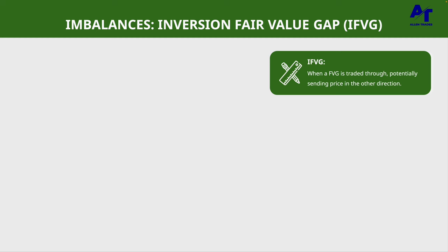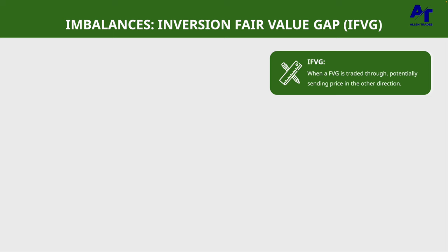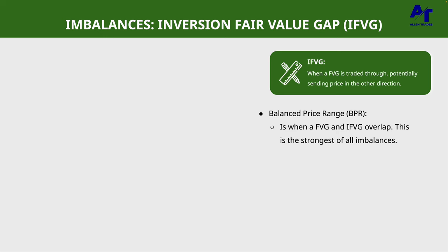The next type of imbalance is an inversion fair value gap — basically a fair value gap that was traded through and failed. If a fair value gap gets traded through, it becomes an inversion fair value gap. When you have a fair value gap overlapping with an inversion fair value gap — meaning price traded through the original fair value gap (making it an inversion) but in doing so created its own fair value gap — this is called a balanced price range.